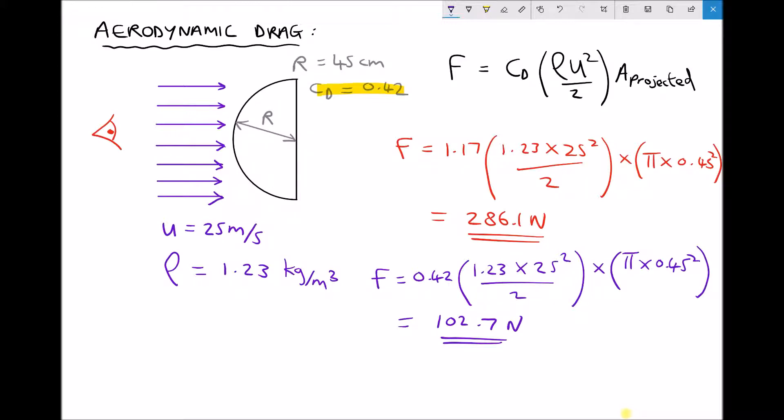Another thing to consider in aerodynamic drag calculations is relative wind. Here we've specified a wind speed of 25 meters per second, but what if the hemisphere itself was moving?